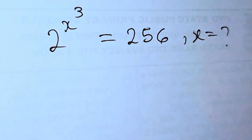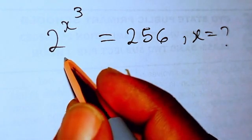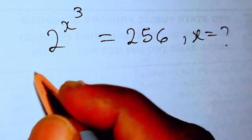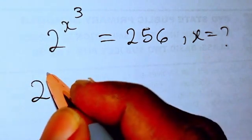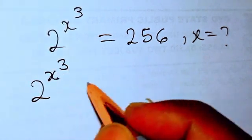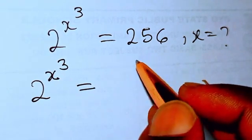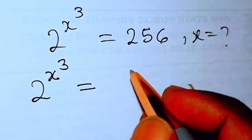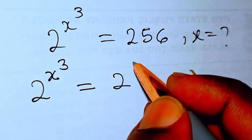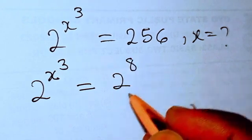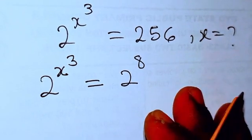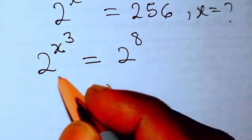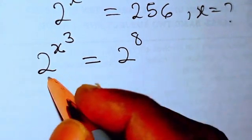I'm going to rewrite this equation as 2 to the power of x to the power of 3, because 256 can be written as 2 to the power of 8. If you multiply 2 by itself 8 times you get 256.